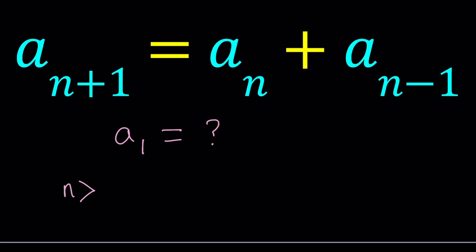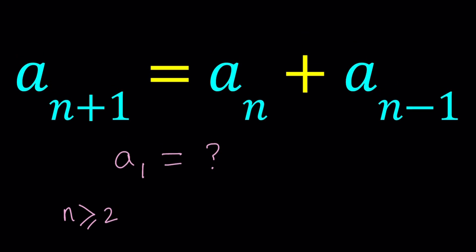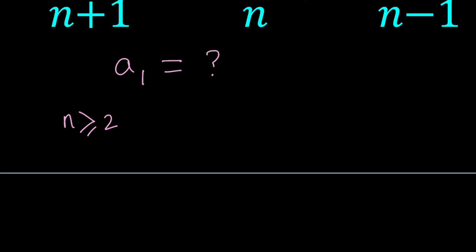If n is greater than or equal to 2, then this equation is valid because the first term is going to be a sub 1. So I'm going to go ahead and set a sub n equal to r to the power n. And then from here we get the following: a sub n plus 1 is just going to be r to the power n plus 1, and a sub n minus 1 is going to be r to the power n minus 1.